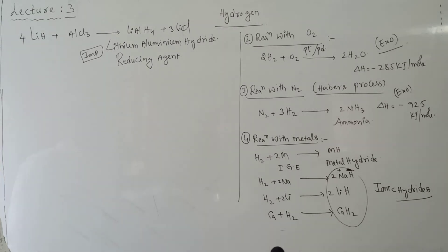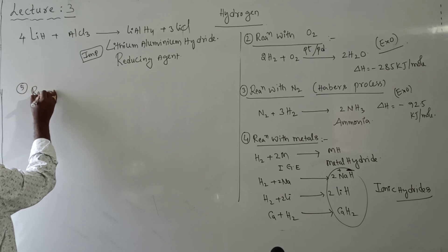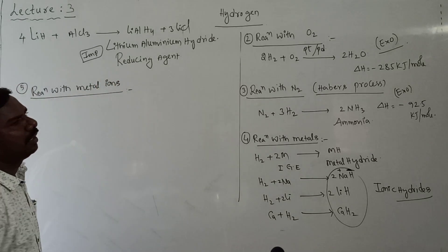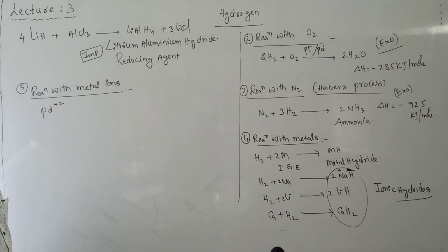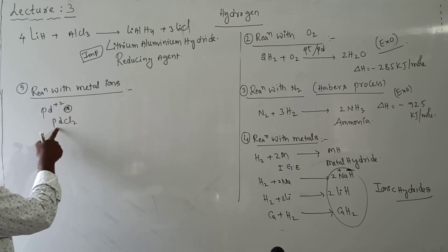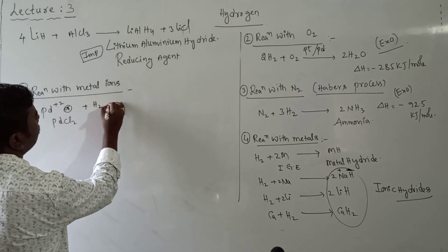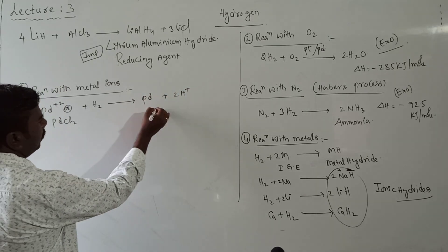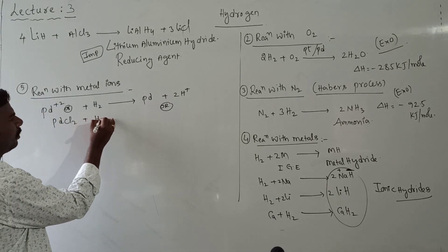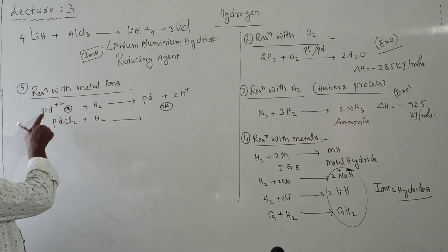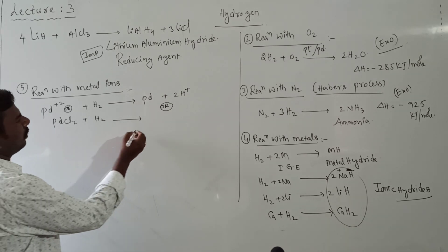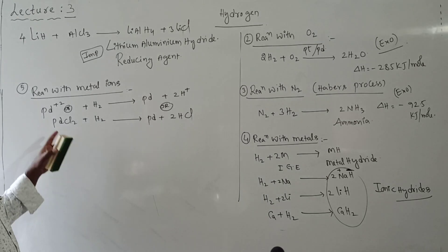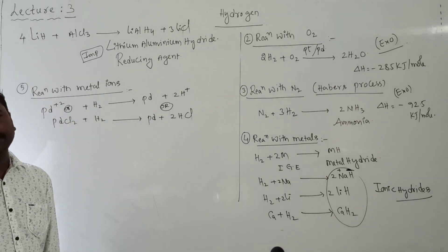Fifth: reaction with metal ions. Metal ions such as Pd²⁺ are reduced by hydrogen. For example: PdCl₂ + H₂ → Pd + 2HCl. The Pd²⁺ ion is converted to Pd metal, and the 2Cl⁻ ions form HCl. Metal ions are thus converted into metals by hydrogen.